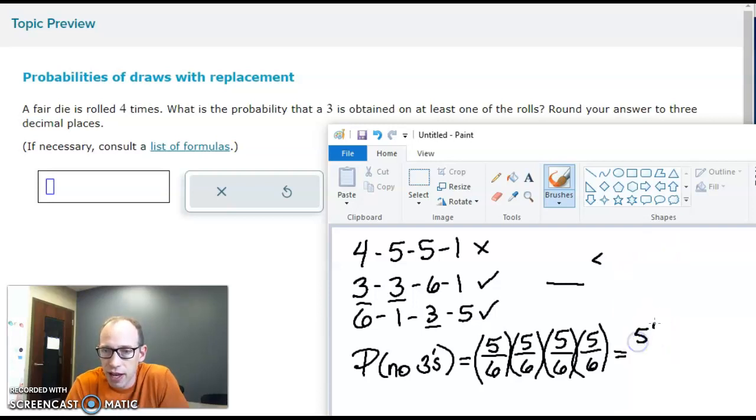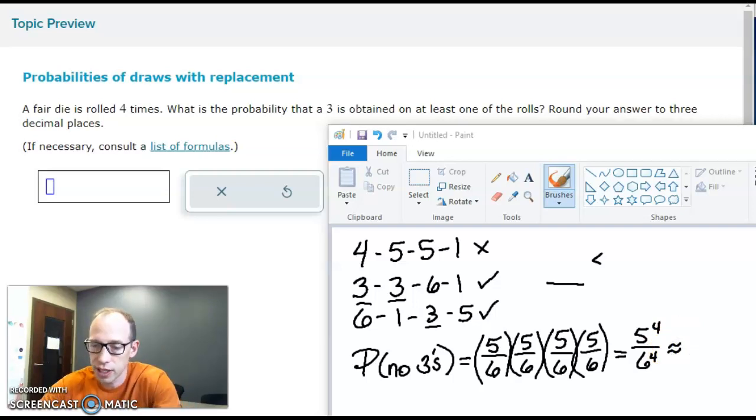So this gives us five to the fourth over six to the fourth, which is roughly, let me do this on my calculator here really quickly. We have five to the fourth divided by six to the fourth.